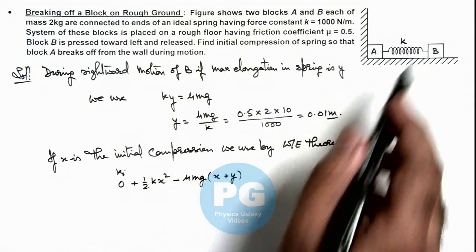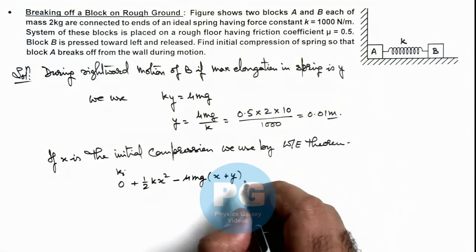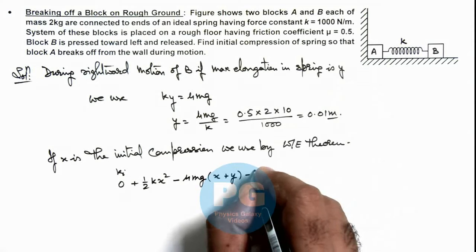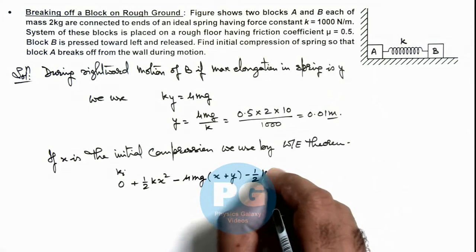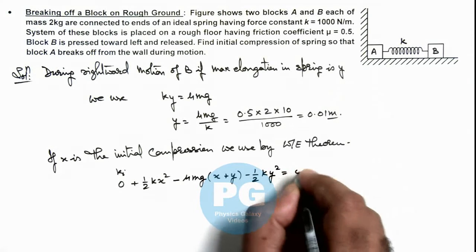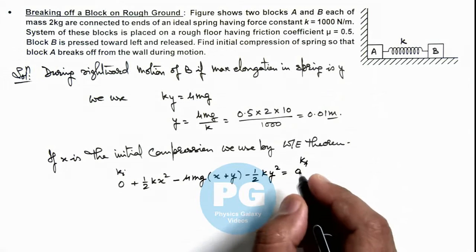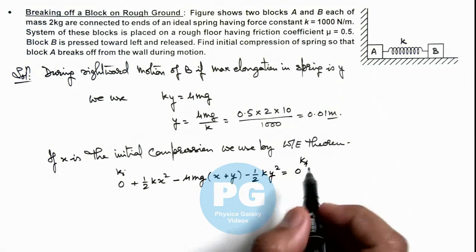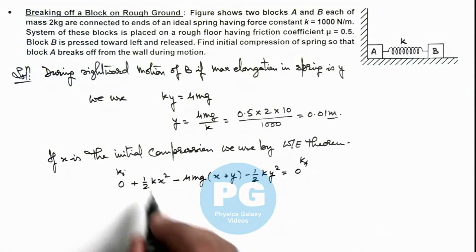And the energy absorbed by spring, or negative work done by spring that time, will be minus half ky squared, that is equal to zero, the final kinetic energy of the blocks. So here if we substitute all values, here we can see the value of k is 1000, so this is 500x squared.